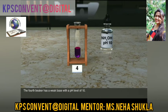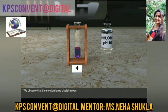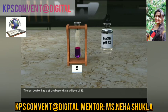The fourth beaker has a weak base with a pH level of 10. Add a few drops of the base to the fourth test tube. We observe that the solution turns bluish green.